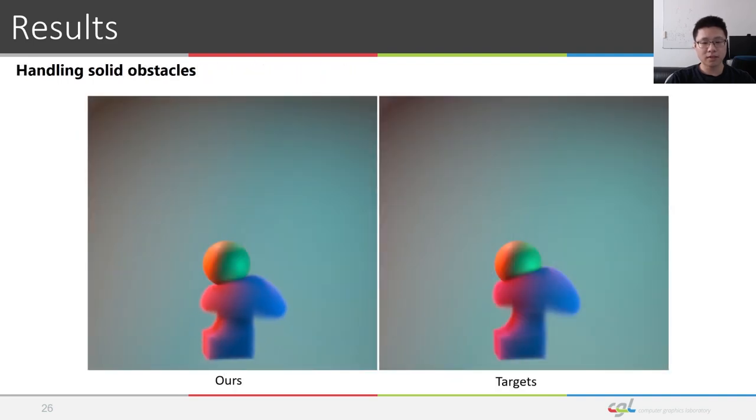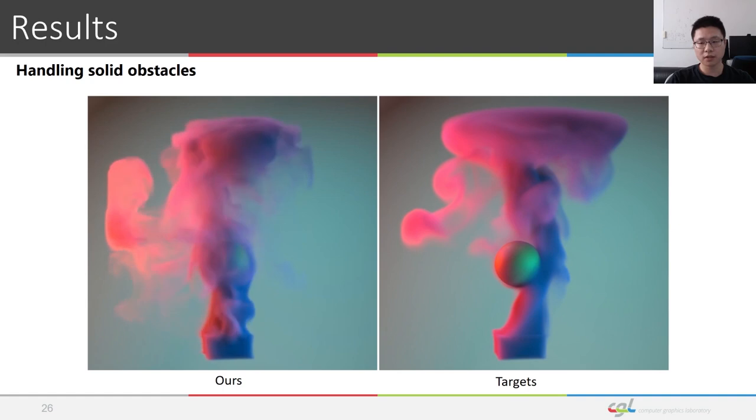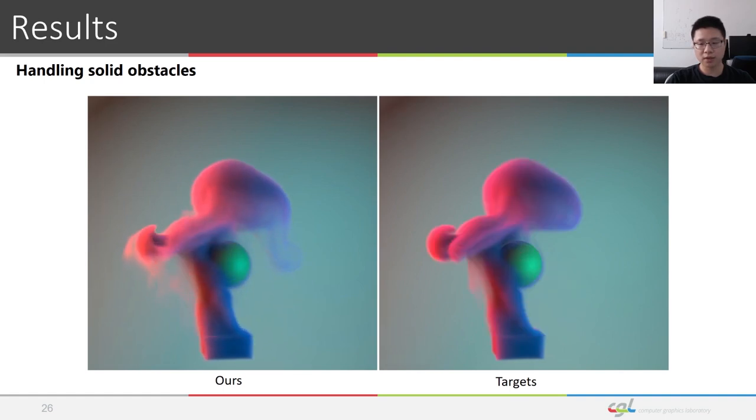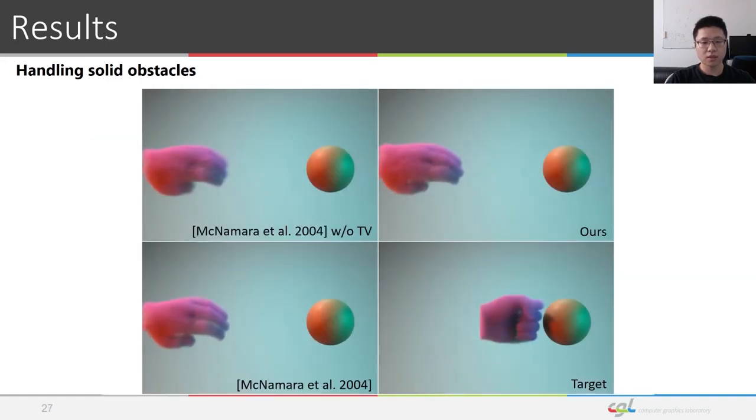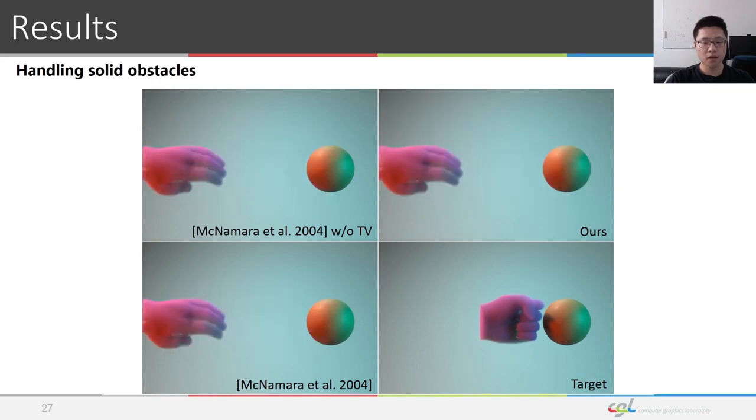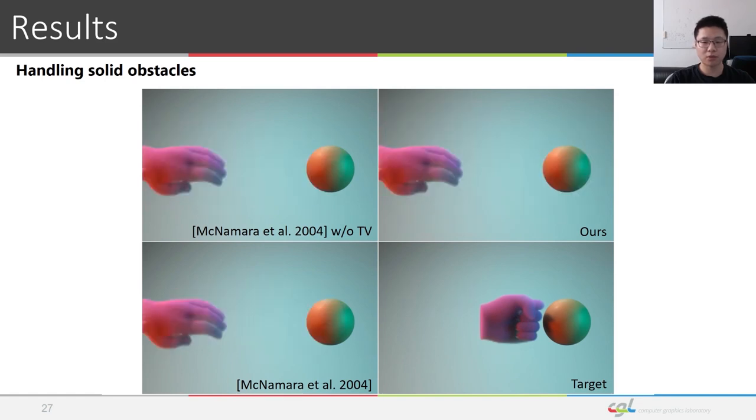Our method is easily extended to include solid obstacles. Because boundary conditions do not affect the gradients with respect to the force field. The force field values lying inside the solid obstacles also do not affect the simulation. Because the pressure projection step can handle the velocity field penetrating into solid obstacles. Our approach successfully matches the target keyframes without apparent discontinuity in between keyframes.